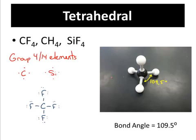The first shape we're going to look at is known as tetrahedral. Tetra is a prefix that means four — like Tetris. Coming off of the central atom, you have one, two, three, four — four bonds. You have a central atom and there are four bonds coming off of it.